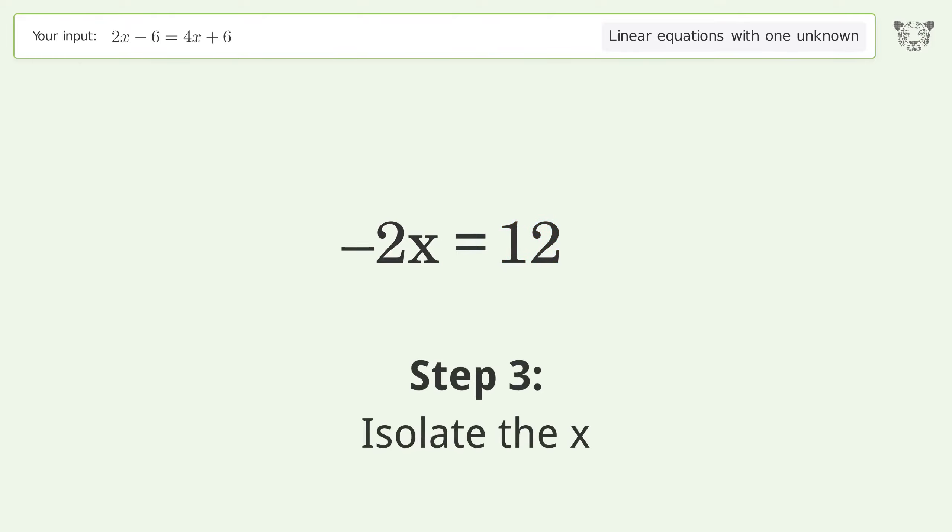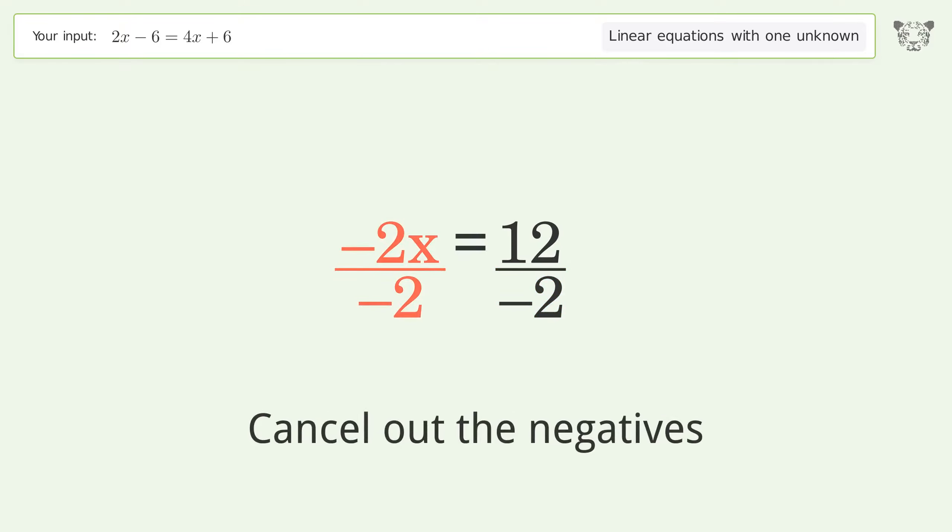Isolate the x. Divide both sides by negative 2. Cancel out the negatives. Simplify the fraction.